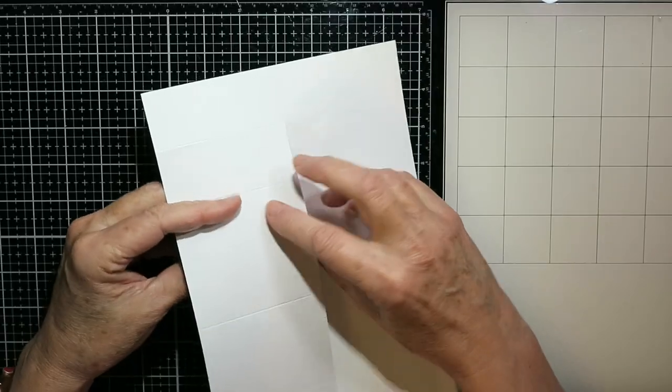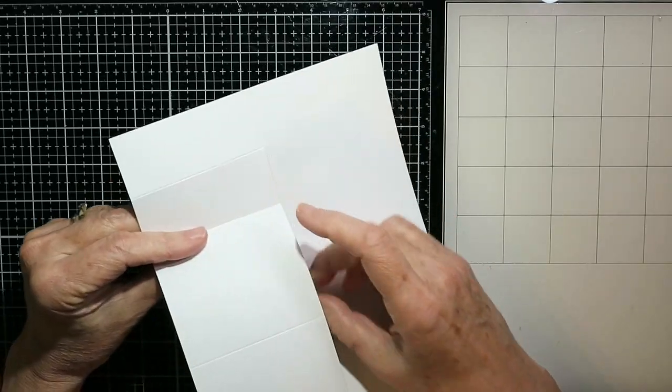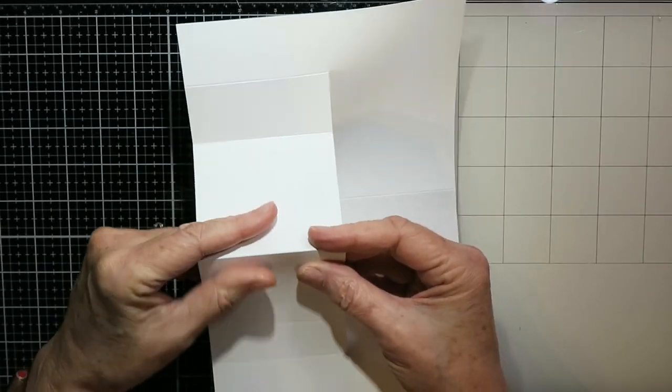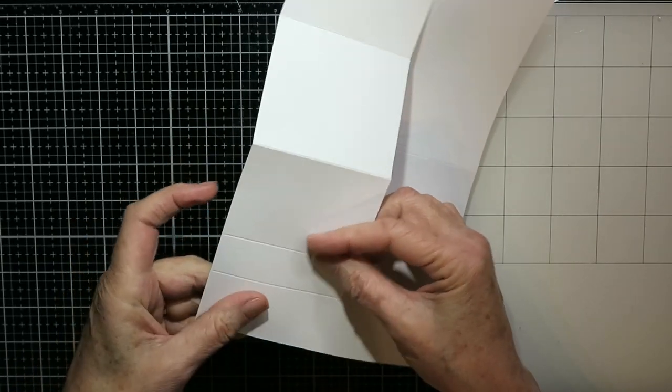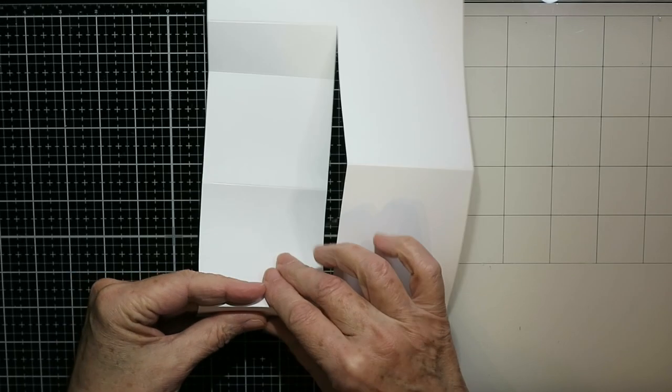You can't fold these all the way down just yet, but they will go eventually. But you need to sort of get them started. So it's mountain, valley, mountain, valley, and a mountain at the end.